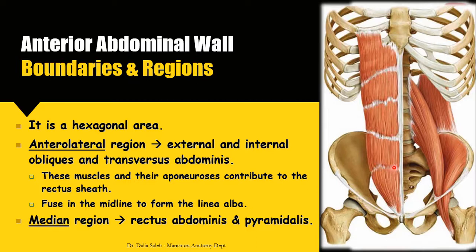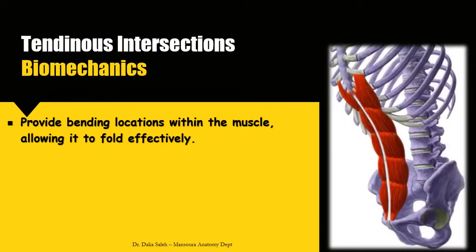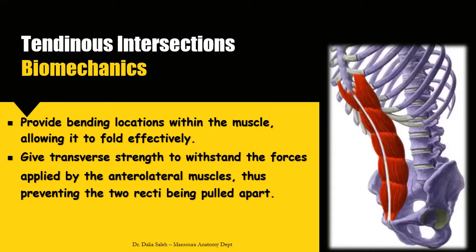There are many tendinous intersections that traverse the rectus abdominis, ranging from three to five in number. They provide bending locations within the muscle to allow it to fold effectively; otherwise there would be excessive shortening and bunching of the muscle fibers. They also give transverse strength to withstand forces applied by the lateral muscles, preventing the two recti from being pulled apart.